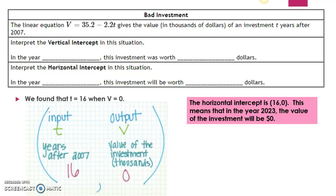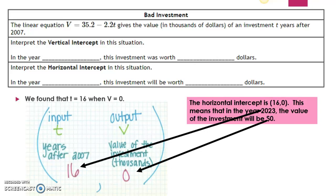So in the year 2023, the value of the investment will be zero dollars. I know that we're talking about the year 2023 because it's been 16 years after 2007 — 2007 plus 16 gives me the year 2023. The value of the investment in thousands of dollars is just zero, so in the year 2023 this investment will be worth zero dollars. And that's why it's called a bad investment.